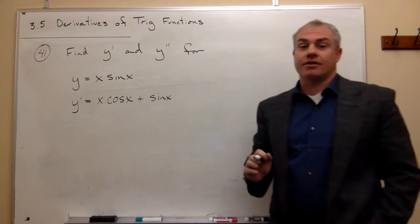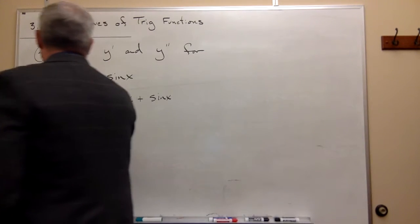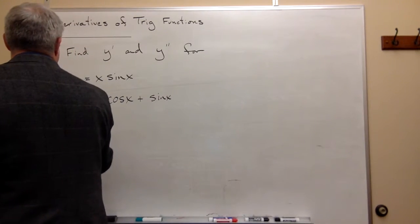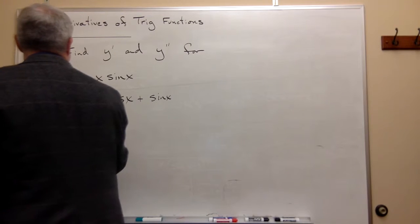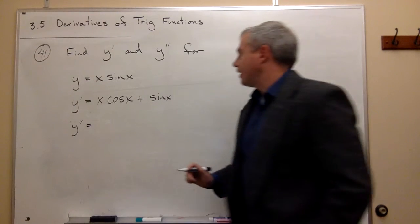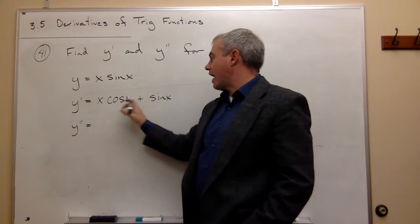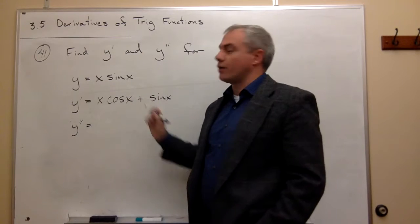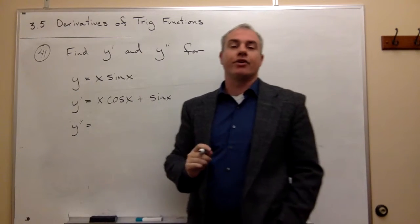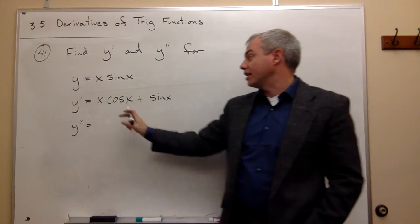Now let's take the second derivative. To find y double prime, since the terms are added together, I can just take the derivative of each of those separately.